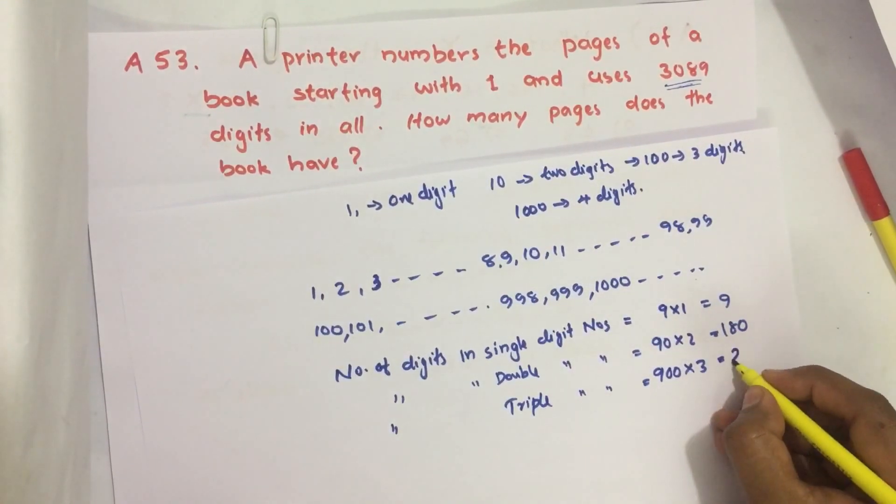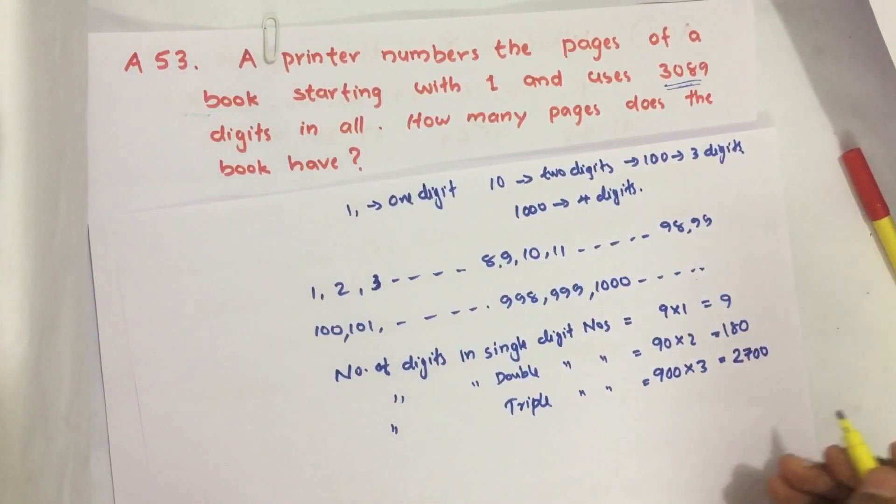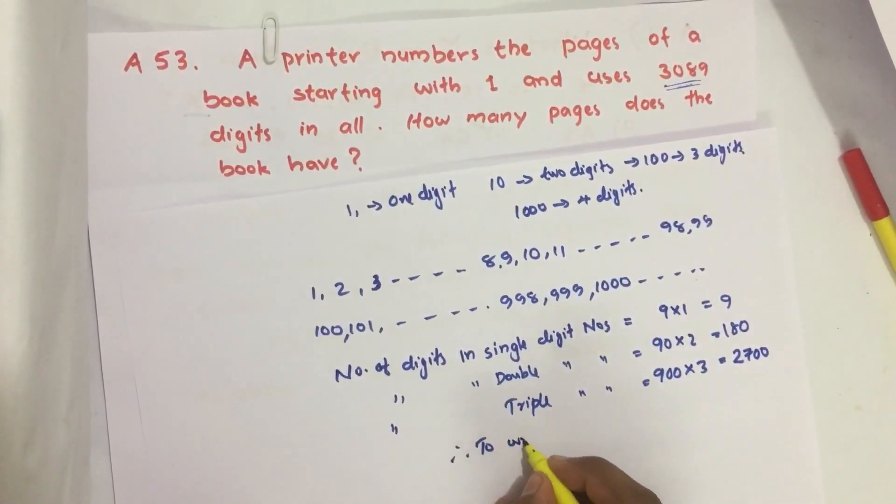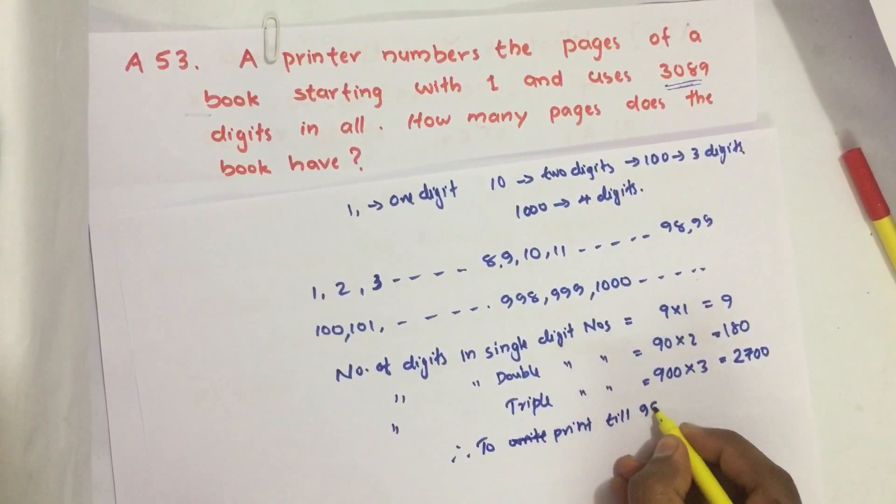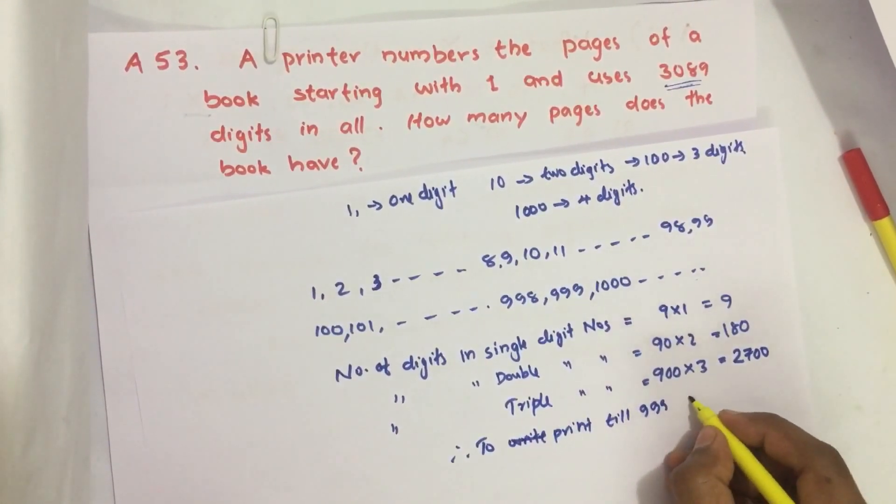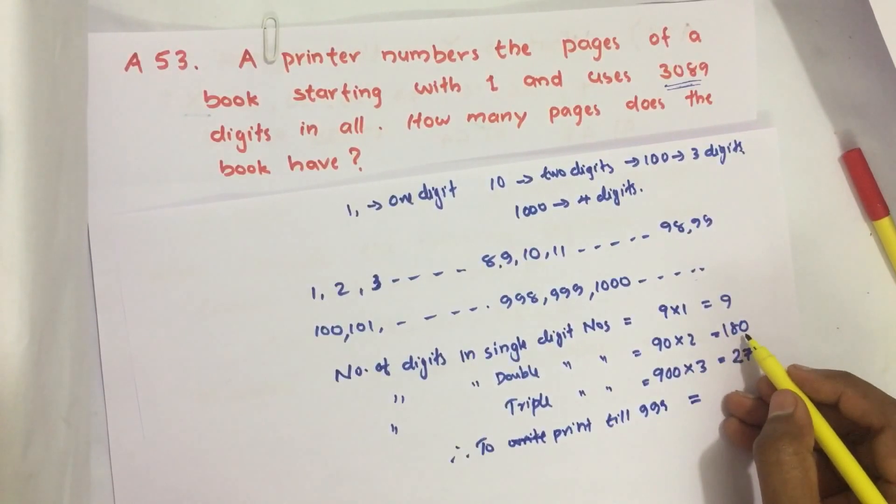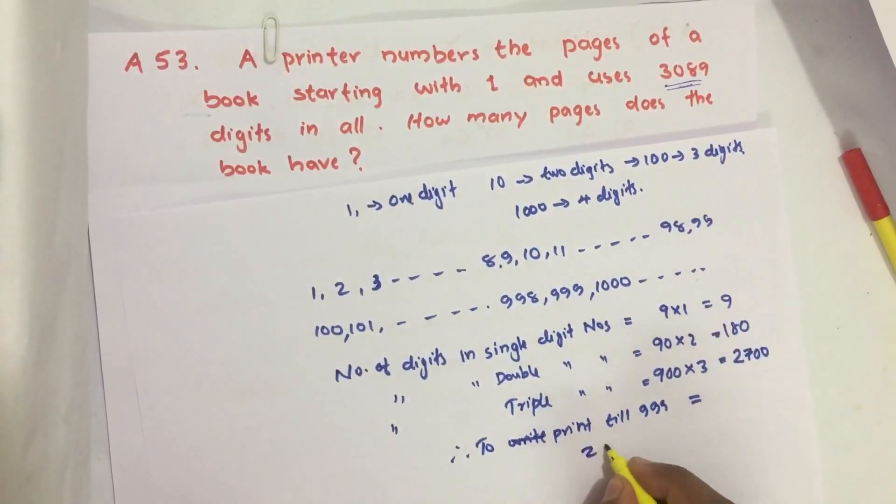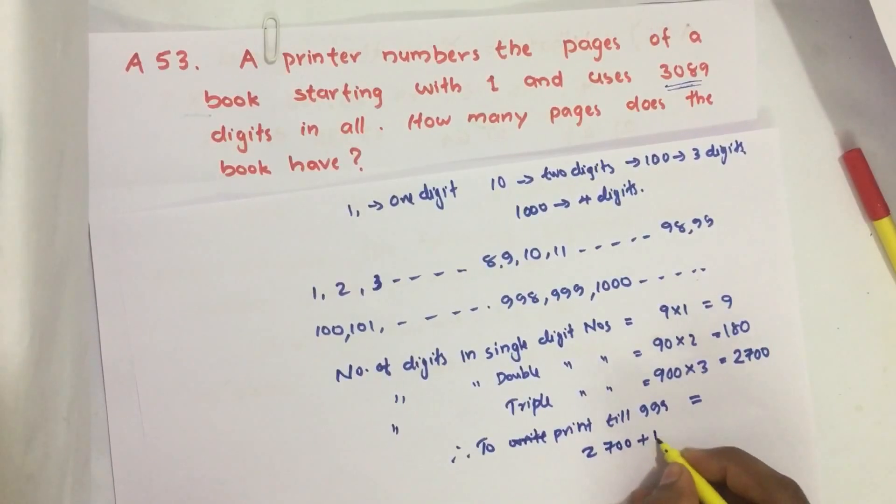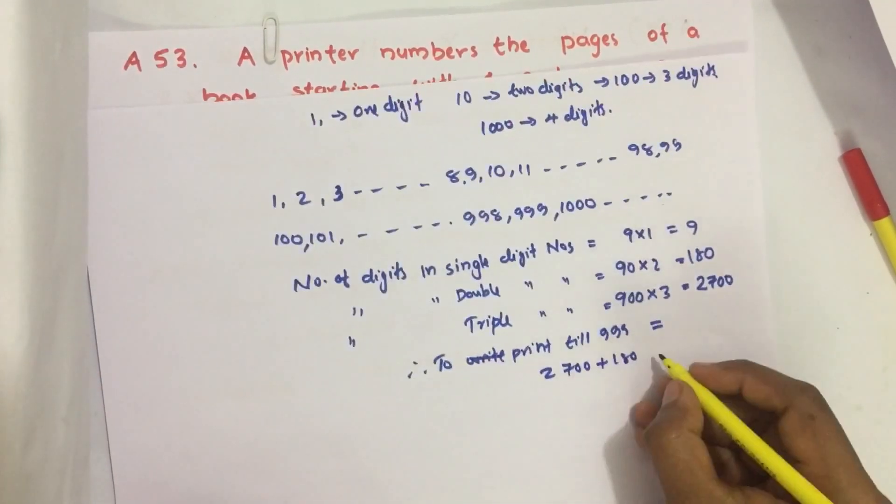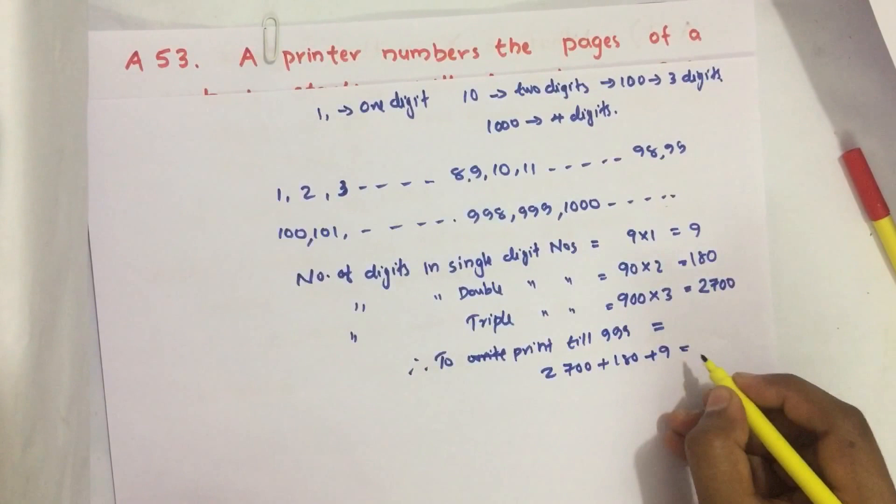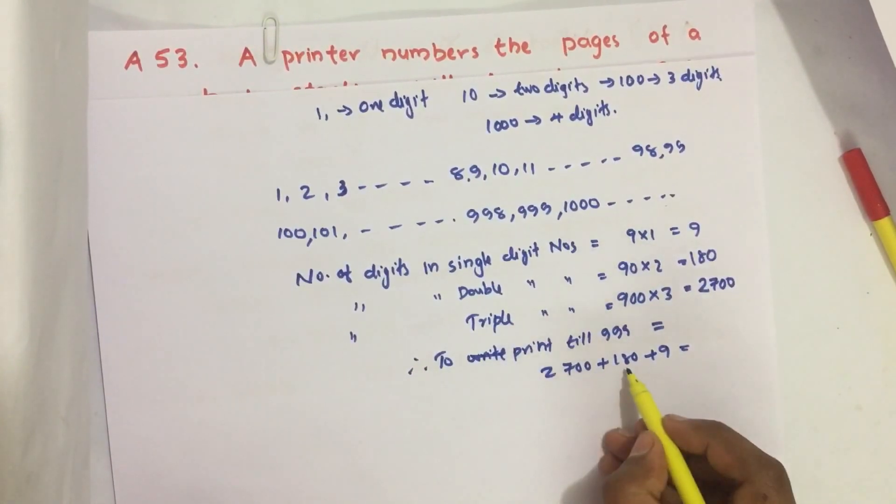So that's 2700 digits total. Therefore, to print till 999, the total digits used are 2700 plus 180 plus 9.